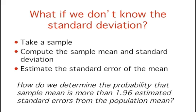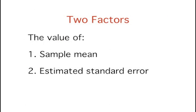But what happens if we have a normal distribution and don't know the standard deviation? We would take a sample and compute the sample mean and sample standard deviation. We could then estimate the standard error of the mean based on the sample standard deviation and the sample size. But how do we determine the probability that our sample mean is more than 1.96 estimated standard errors from the population mean? This isn't easy since there are two factors that affect whether the sample mean is more than 1.96 estimated standard errors from the population mean.